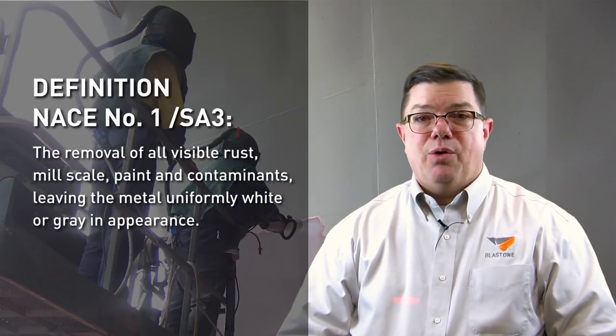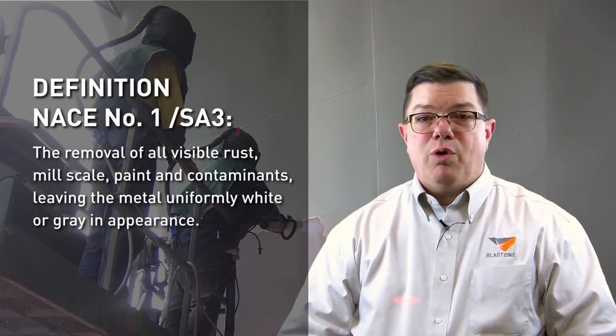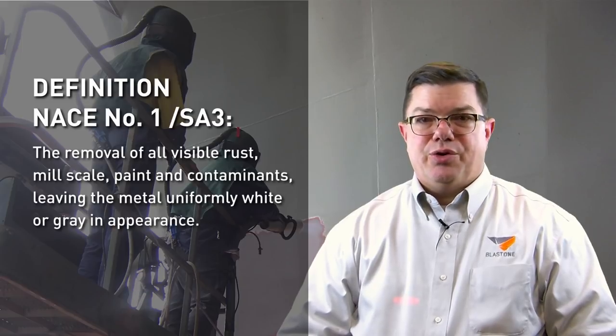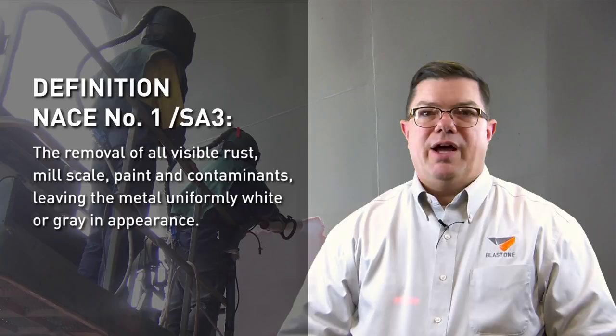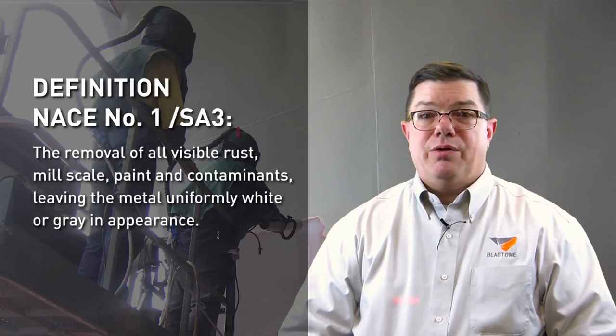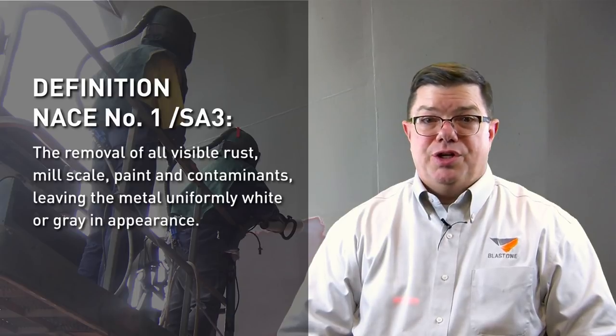Number two, if a legitimate disagreement does happen after the fact, both parties should always argue from the agreed upon definition: the removal of all visible rust, mill scale, paint, and contaminants, leaving the metal uniformly white or gray in appearance. In disagreement, the blaster and inspector most likely find themselves disagreeing on the uniformity of the substrate's appearance. If it appears uniform to you, ask the inspector to show exactly where the inconsistency is, and if that's the only region they have an issue with. Visual uniformity can be a subjective matter, so always de-escalate tension. As to not provoke an ego battle, you may have to brush off some areas to satisfy the inspector's sense of uniformity, but you will now know what is expected and you can adjust accordingly for the days to come.